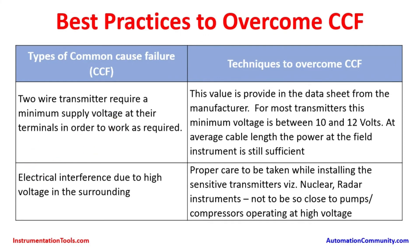Two-wire transmitters require a minimum supply voltage at their terminals to work correctly for pressure, flow, differential pressure, temperature, and level measurements. In some plants, field instruments may be far from the control room, causing the 24 V supply to drop to 15 V or 14 V depending on cable type and length. Where this occurs, step-up voltage devices or additional barriers must be installed in between.